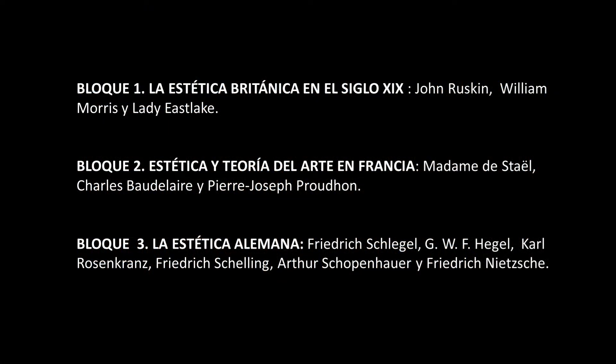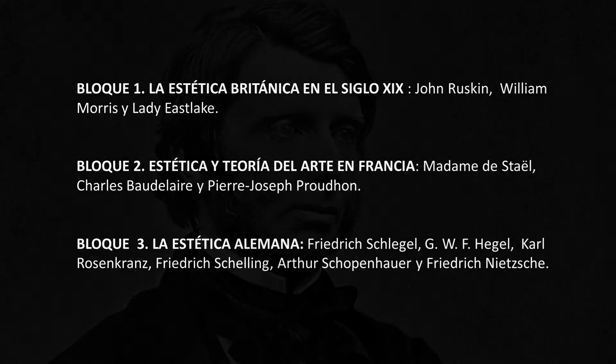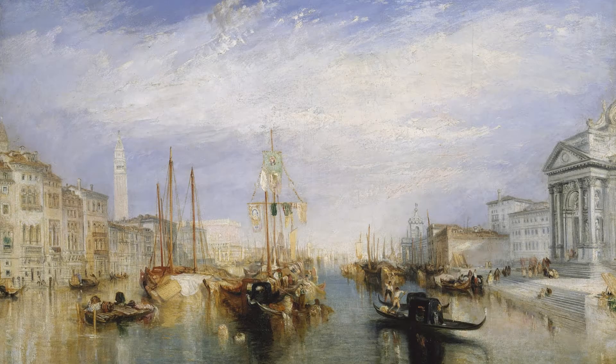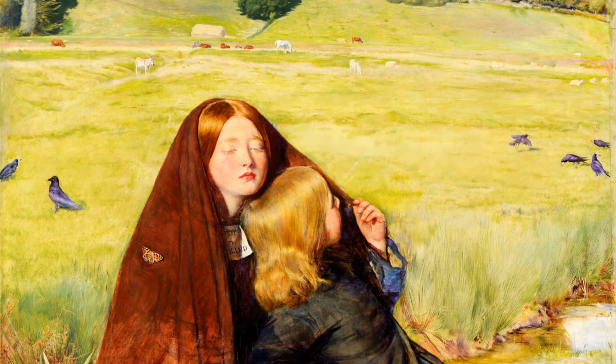El programa está estructurado en tres bloques que serán desarrollados durante las seis semanas en las que estará activo el curso. El bloque 1 estará centrado en la estética británica, y en este nos centraremos fundamentalmente en las reflexiones sobre el arte y la belleza de John Ruskin, en especial en sus teorizaciones sobre el paisajismo romántico y el prerrafaelismo.